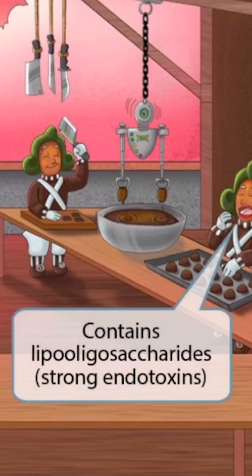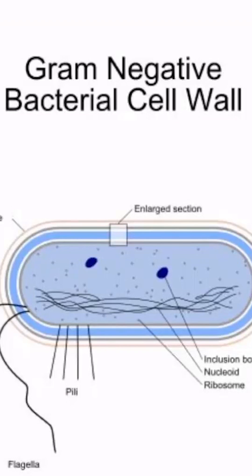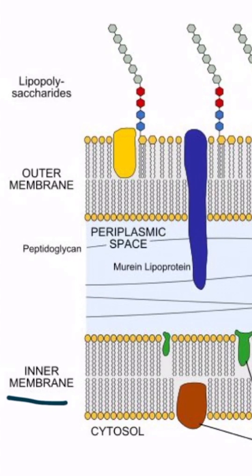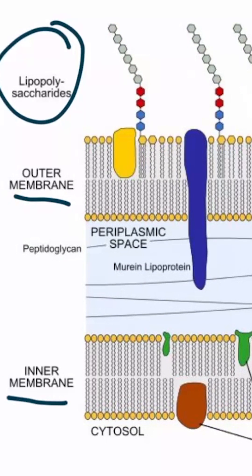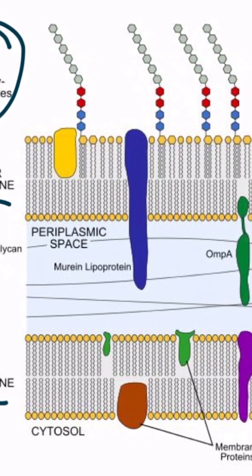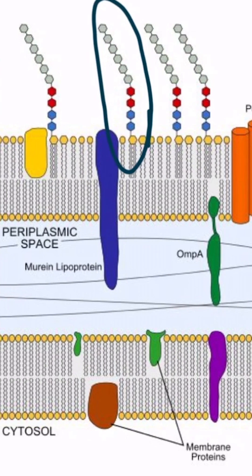Lipooligosaccharides act as strong endotoxins that cause sepsis and shock. This is an image of the bacterial cell wall of gram-negative organisms. You can see we've zoomed in on this part of the cell wall — this is the inner membrane and this is the outer membrane. This image shows lipooligosaccharides embedded in the outer membrane. The lipooligosaccharide of Neisseria would look like these structures on the outer membrane of the cell wall.